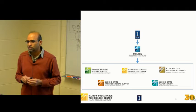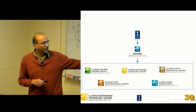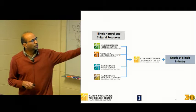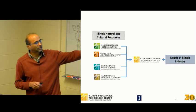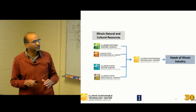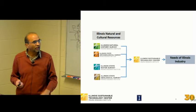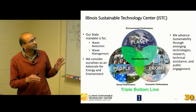We actually report to the Office of Vice Chancellor for Research and PRI. I think it's the biggest institute on campus, employing around a thousand people. It consists of five sister surveys: Illinois Archaeology Survey, Illinois Natural History Survey, State Geological Survey, Water Survey, and Illinois Sustainable Technology Center. The other surveys deal mainly with Illinois natural and cultural resources, while ISTC caters to the needs of industry in Illinois — working with industry to come up with ways to help Illinois industries.